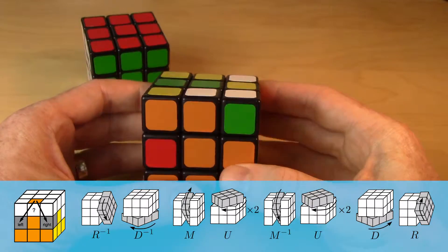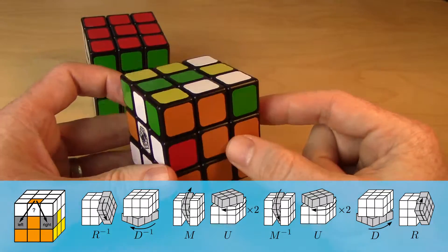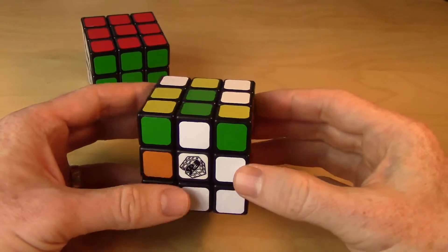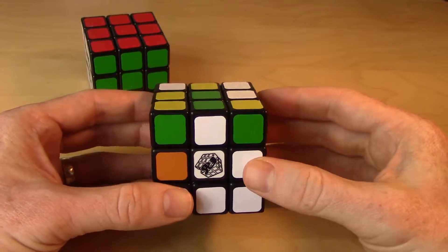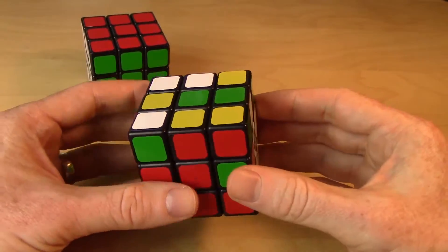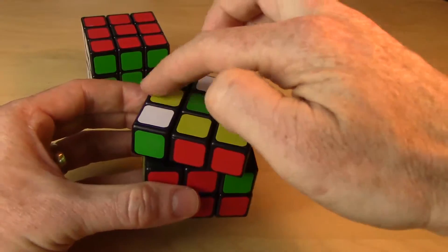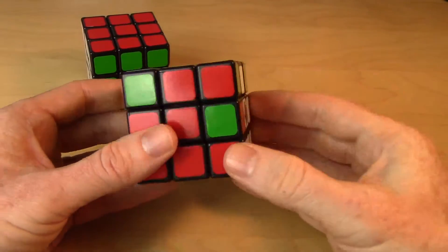So I like this idea of solving the middle layer using the 3-cycle that we're ultimately going to use again in the last layer as well. So we're making good use of a sequence multiple times. We're using it in the last layer to 3-cycle edges, but we're also using it in the middle layer.